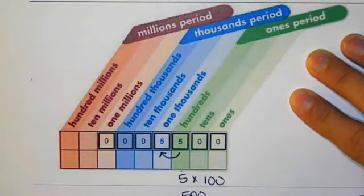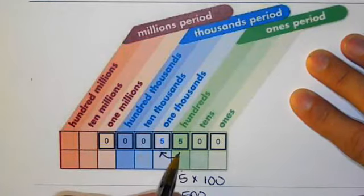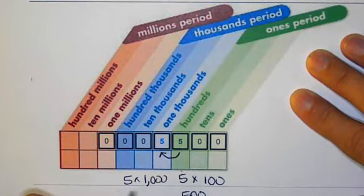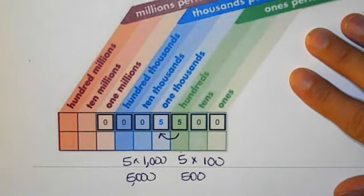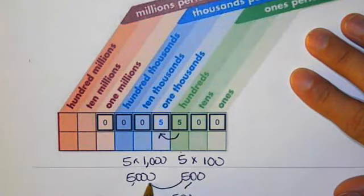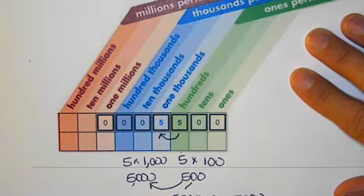This is a five in the hundreds. And when I move from here to here, that's like saying five times 1000, which would be 5000. If I put this in another way, this would be like saying 500, from going from here to here, 500 times 10 equals 5000.